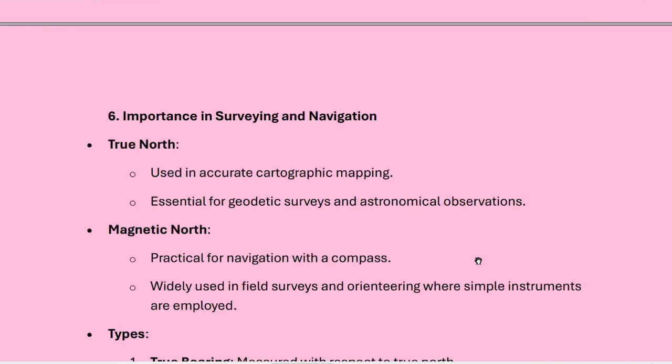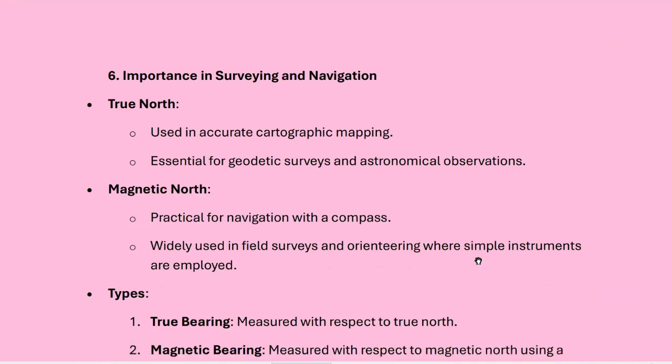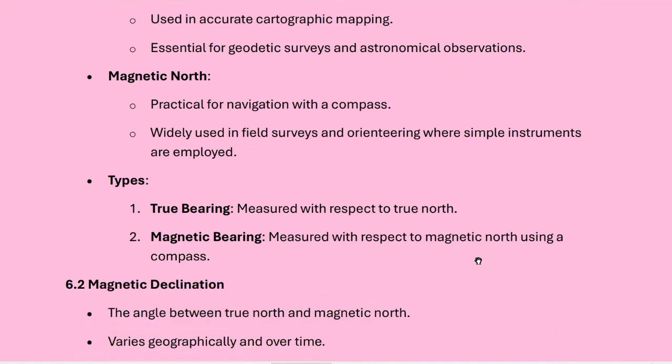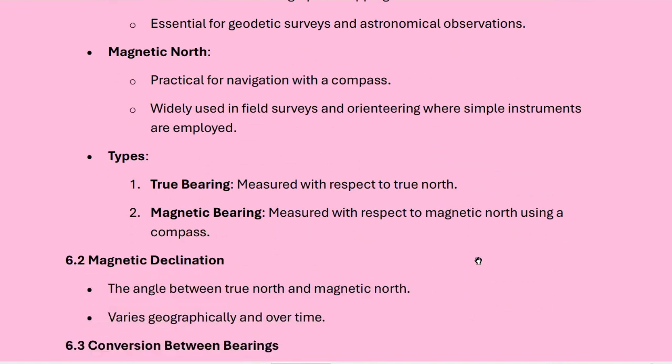Importance in surveying and navigation: true north is used in accurate cartographic mapping and is essential for geodetic surveys and astronomical observations. Magnetic north is practical for navigation with a compass and is widely used in field surveys and orienting where simple instruments are applied. True bearing is measured with respect to true north, and magnetic bearing is measured with respect to magnetic north using a compass.